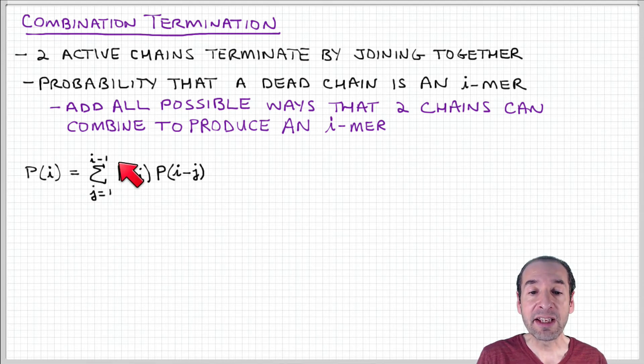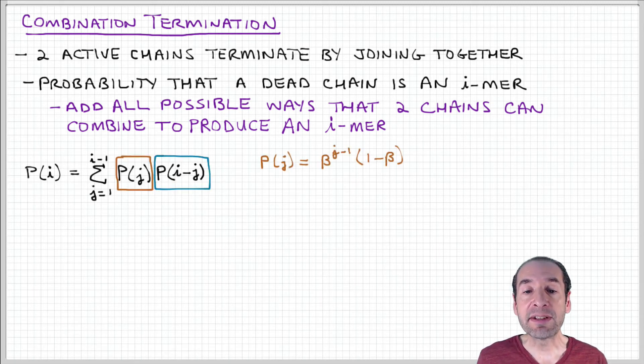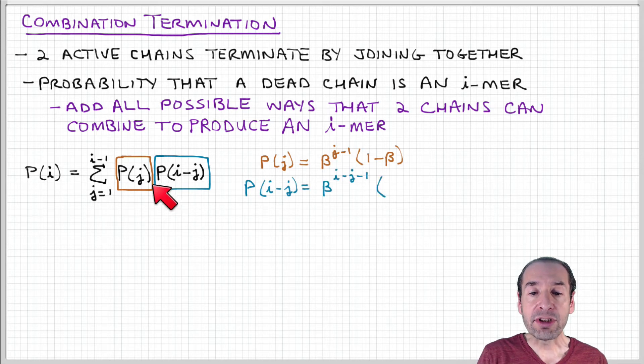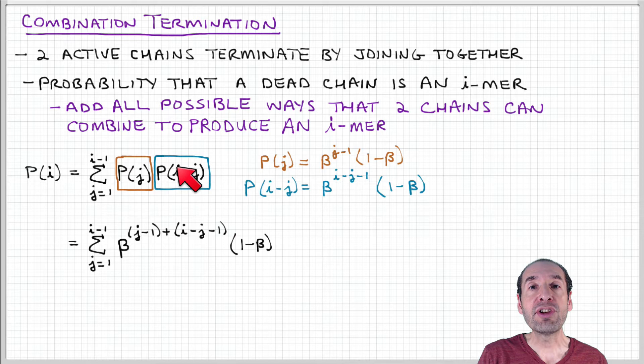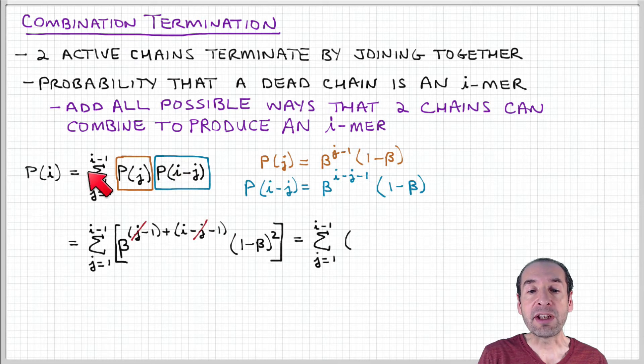And we have to add this over all the i and j combinations that could exist. So I want to take a look at each of these terms in this expression so that we can obtain a relationship for this summation.